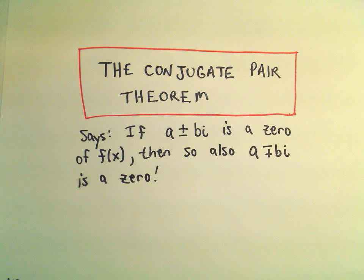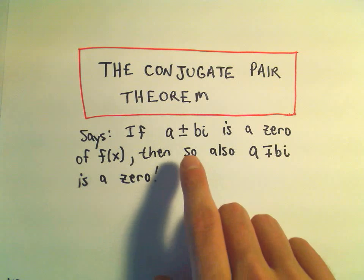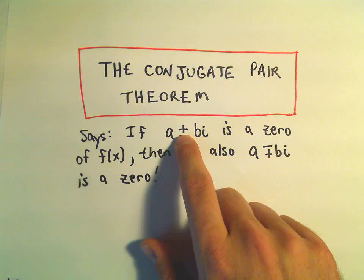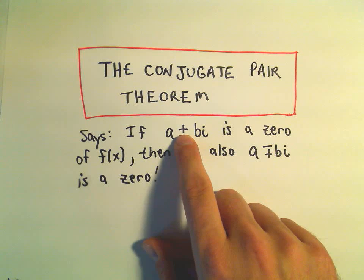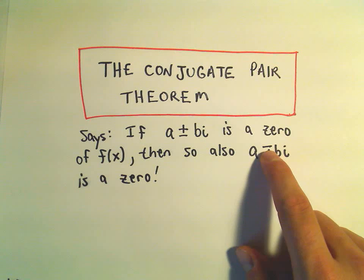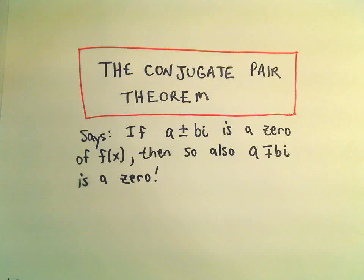In this video we're going to talk about the conjugate pair theorem. The conjugate pair theorem says if you have a complex number of the form, for example, a plus bi, if we know that that's a zero of our polynomial, then it says a minus bi is also a zero.